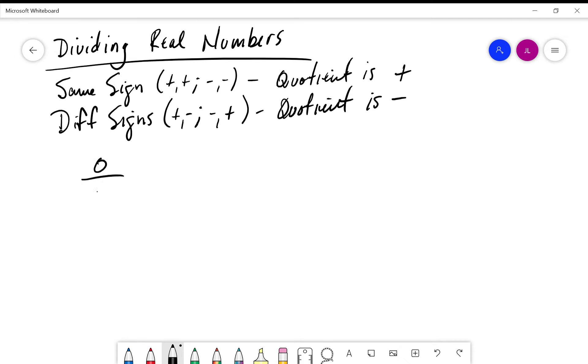If we have zero over a number, this is equivalent to zero. However, if we have a number over zero, this is undefined. We cannot say this is zero or nothing—it is technically undefined.